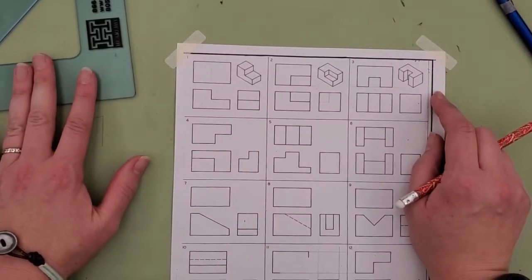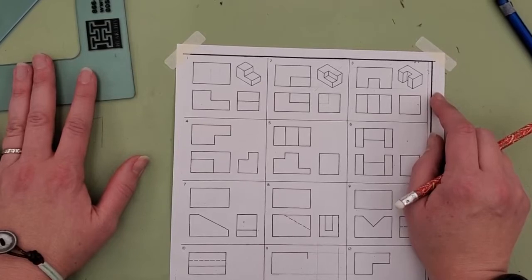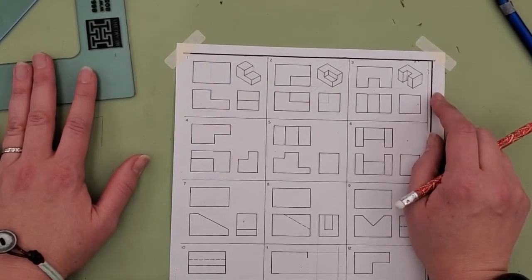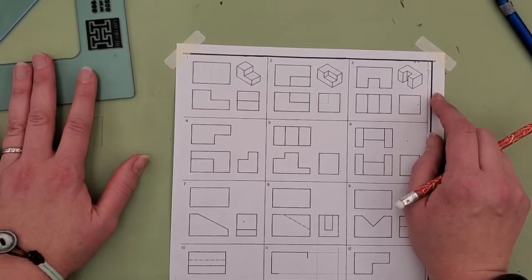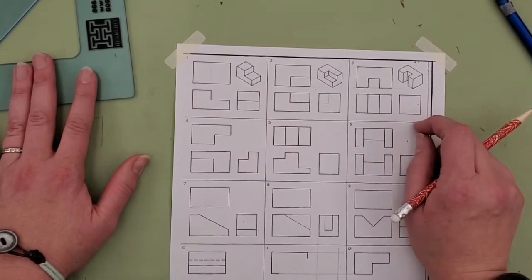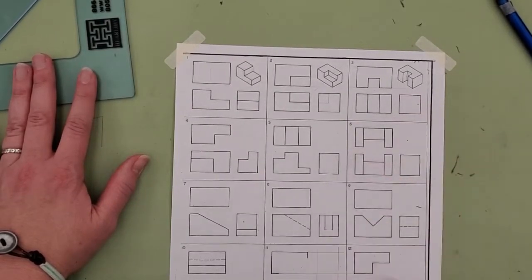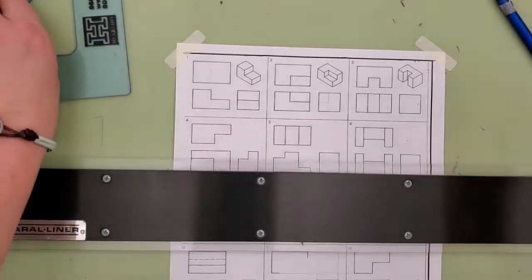You're going to look at the views and decide if one or two or even all three need to add object lines in order to complete the view. Sometimes you're adding hidden lines. So this one's a little bit different than the ones that we've done before.